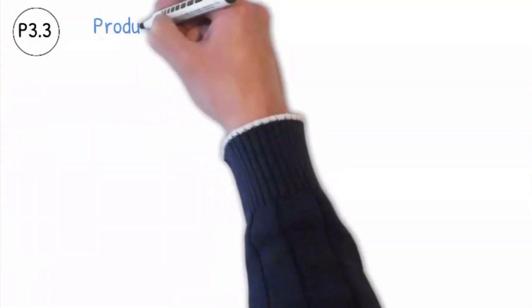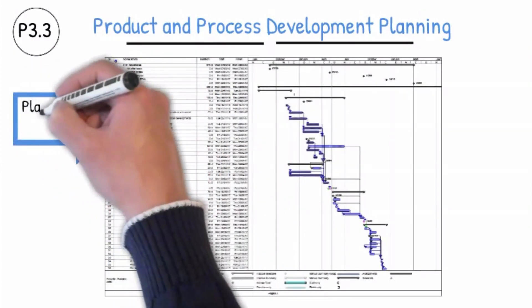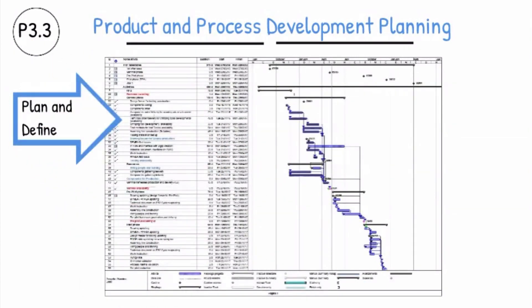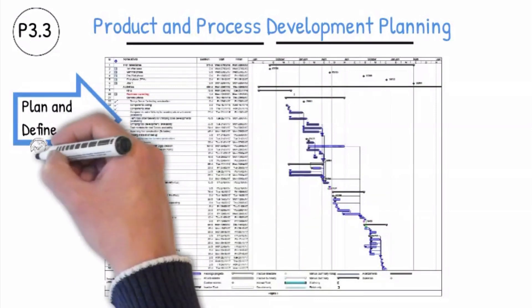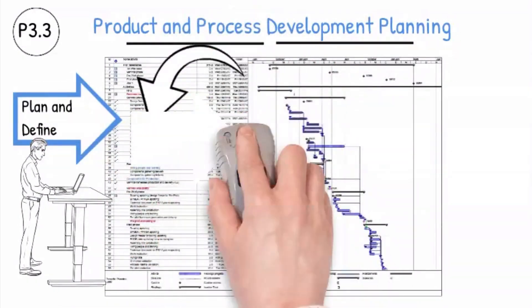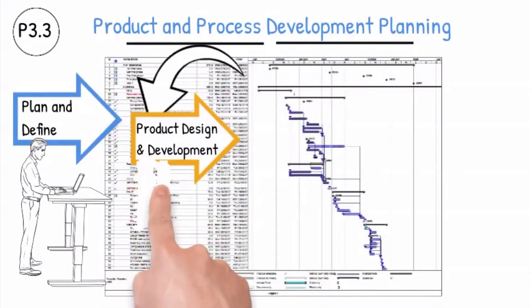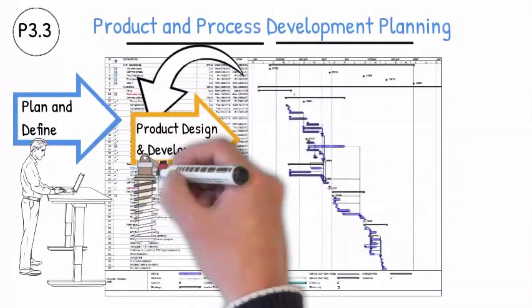When planning the product and process development, the level of detail is dependent on the component, software and complexity of the process. In the development phase, suitable methods must be used to secure the product and process development so that when the product goes into serial production it fulfills the operational conditions in relation to function, reliability and safety.